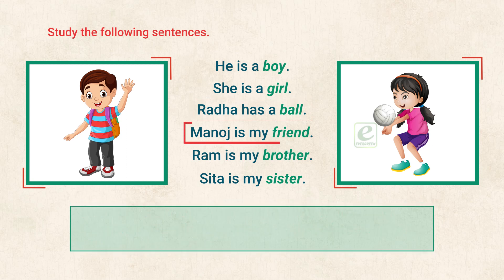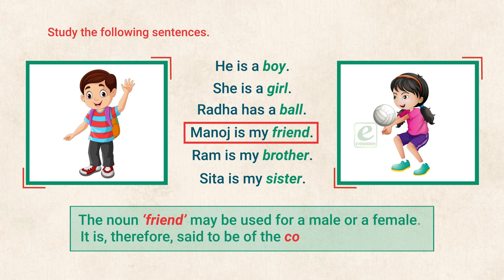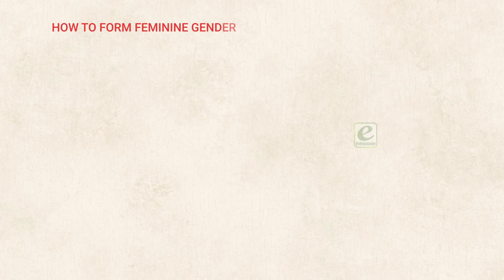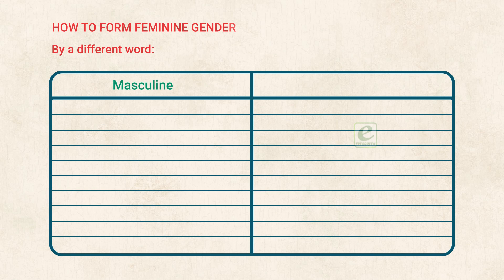In sentence 4, the noun 'friend' may be used for a male or a female. It is, therefore, said to be of the common gender. How to form feminine gender — by a different word. Masculine: Boy. Feminine: Girl.